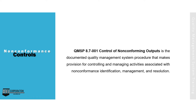QMSP 8.7001 Control of Non-conforming Outputs is the documented quality management system procedure that makes provision for controlling and managing activities associated with non-conformance identification, management, and resolution.